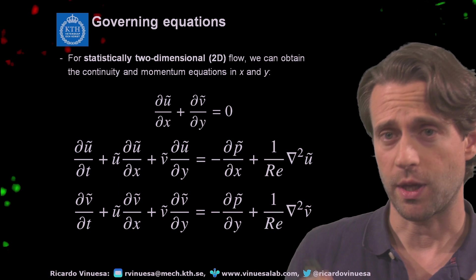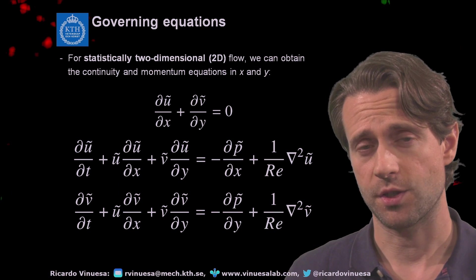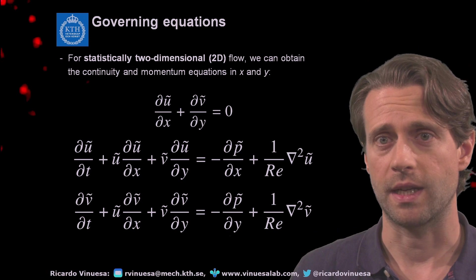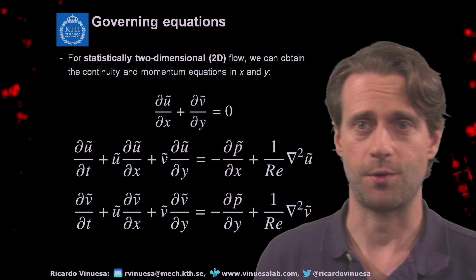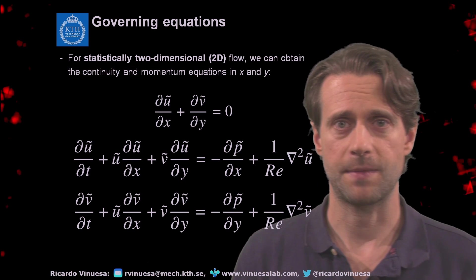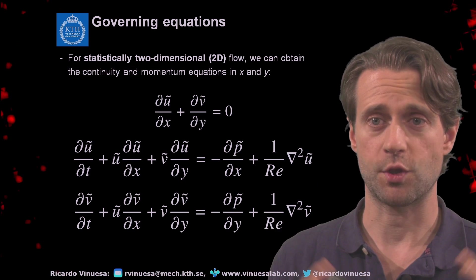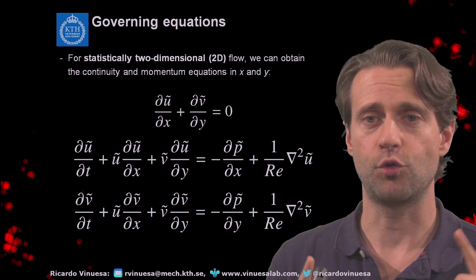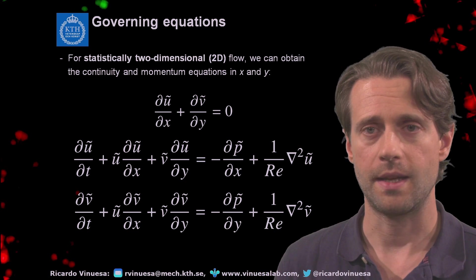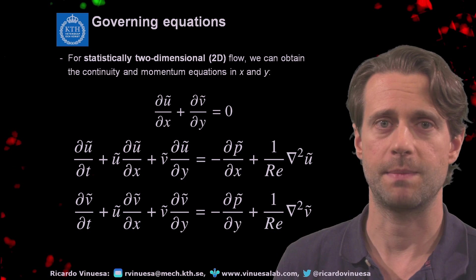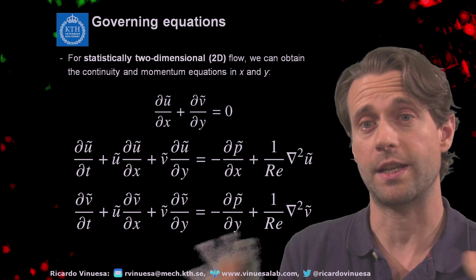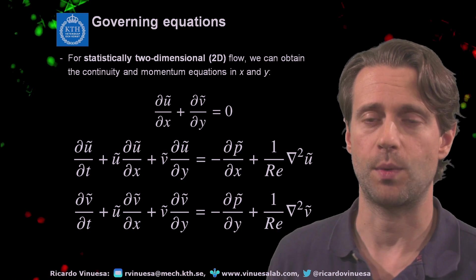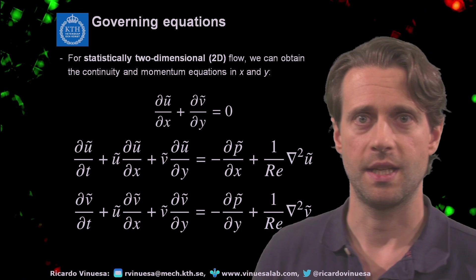To learn more about it and to understand more about the physics of this problem, we can look at the governing equations — the Navier-Stokes equations. Let's look at statistically two-dimensional flow. This means that the third direction is homogeneous statistically, so one can always average in that direction.